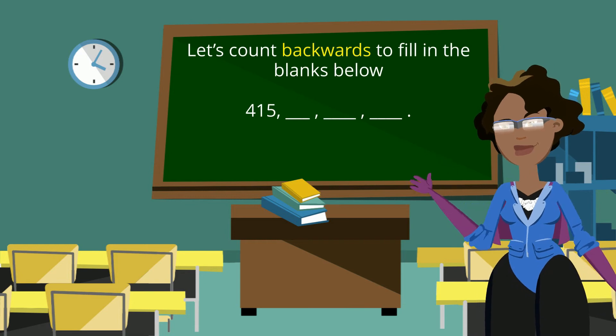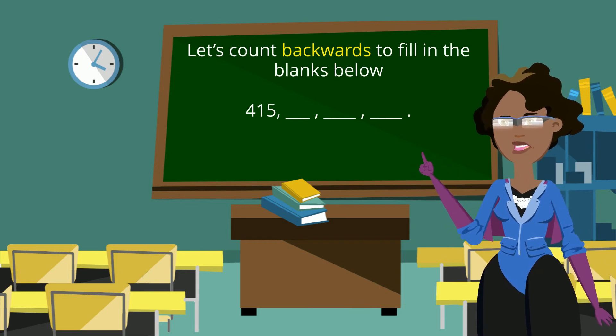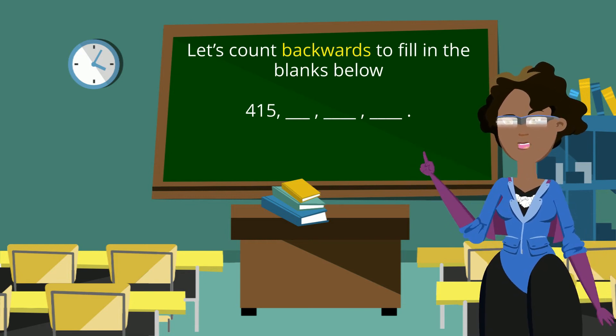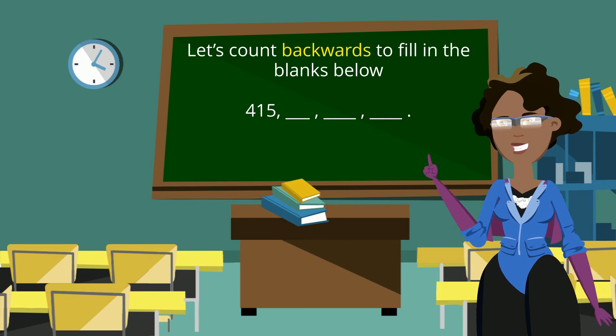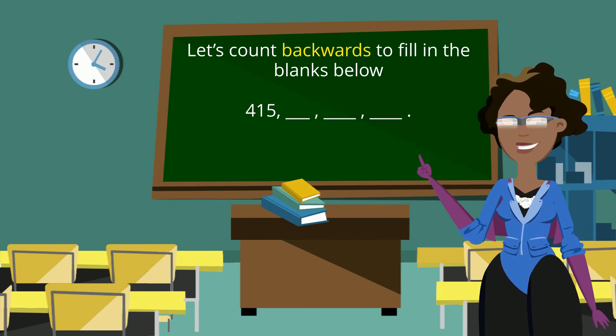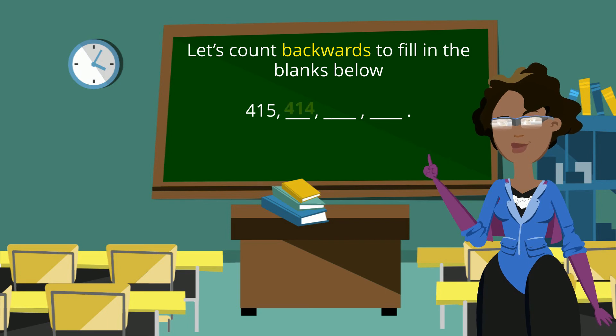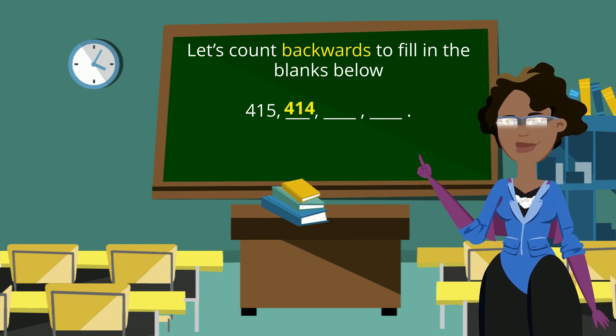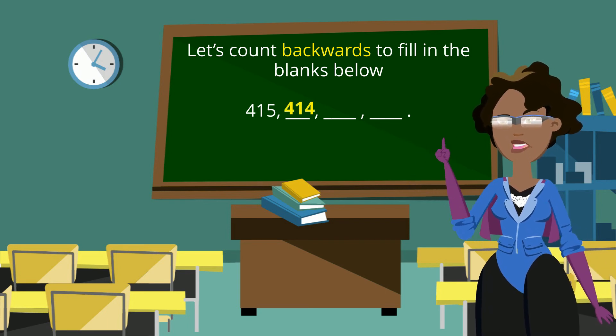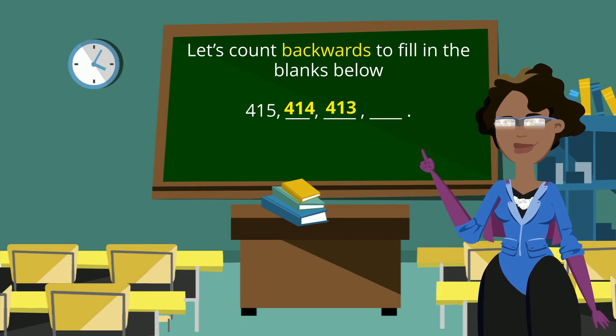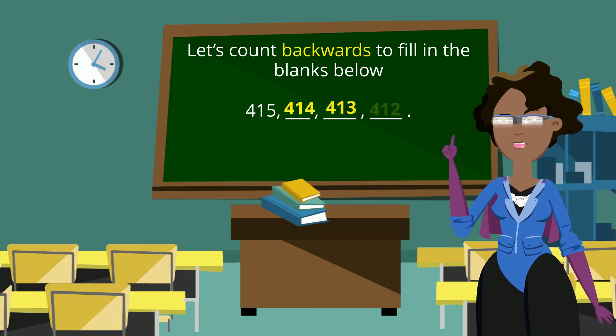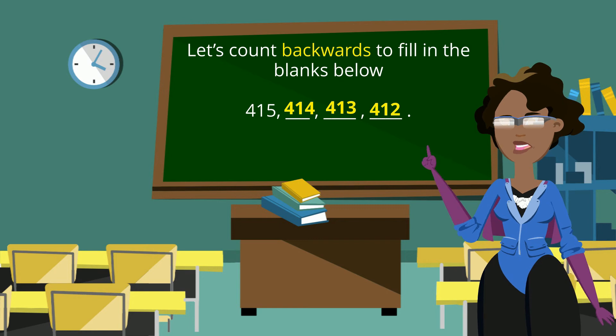Let's go backwards now. Fill in the blanks. In order to fill out our next blank, we have to put the number that comes before 415. What number is that? That's right, 414. And now before 414, 413. And before that, 412. There you go. You really got the hang of this.